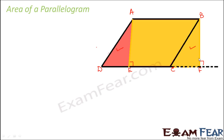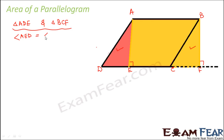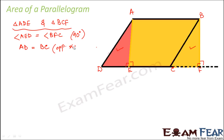When you try to compare these two triangles you would see that both are of equal area. Let us look at triangles ADE and BCF. Angle AED equals angle BFC because both of them are 90 degrees — this is 90 degrees and this is also 90 degrees. Then AD equals BC because they are opposite sides of the parallelogram, so opposite sides of a parallelogram are parallel and equal.